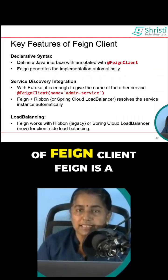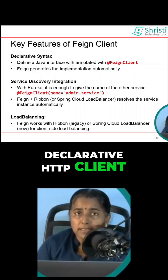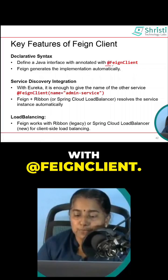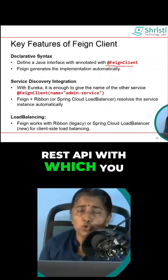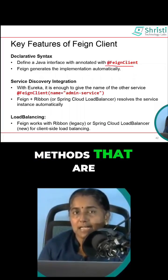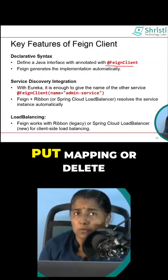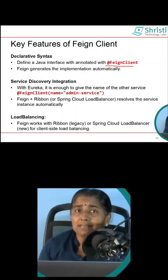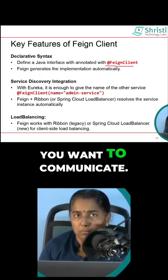What are the key features of Feign Client? Feign is a declarative HTTP client. You need to define an interface that is annotated with @FeignClient. Just provide the name of the REST API with which you want to communicate. Within this interface, add methods that are annotated with either @GetMapping, @PostMapping, @PutMapping, or @DeleteMapping. Within that, pass the URL of the REST endpoint of the REST API with which you want to communicate.